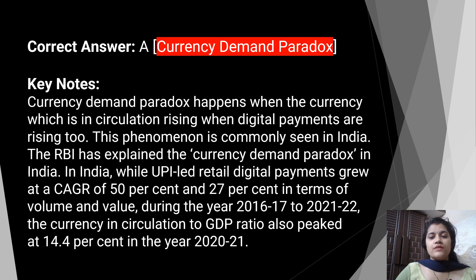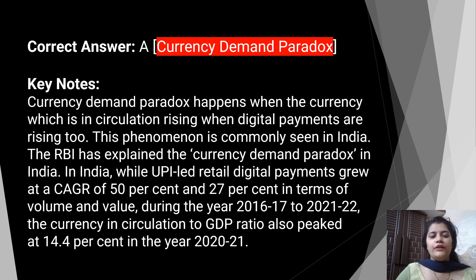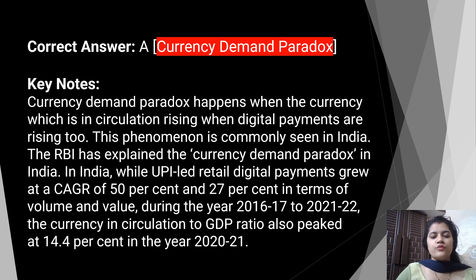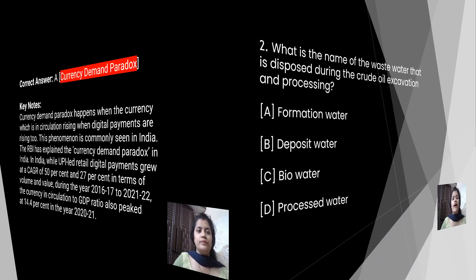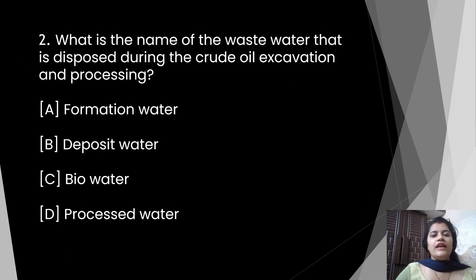Currency Demand Paradox happens when the currency in circulation rises even as digital payments are rising. This phenomenon is commonly seen in India. The Reserve Bank of India has explained the Currency Demand Paradox: while UPI-led retail digital payments grew at a CAGR of 50% and 27% in terms of volume and value during 2016-17 to 2021-22, the currency-in-circulation to GDP ratio also rose to 14.4% in 2020-21.